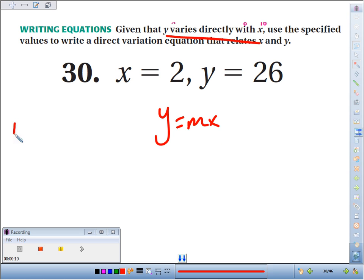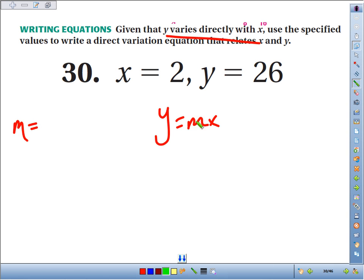The shortcut way is to remember that to find our magic multiple, all you need to write this equation is the m value - the slope, or the constant of variation, whatever you want to think of it as. To find it, you take y divided by x.